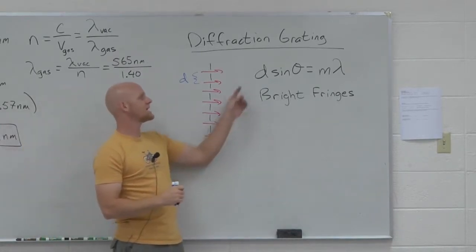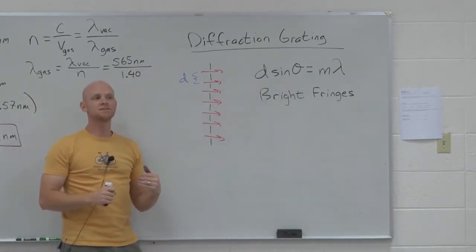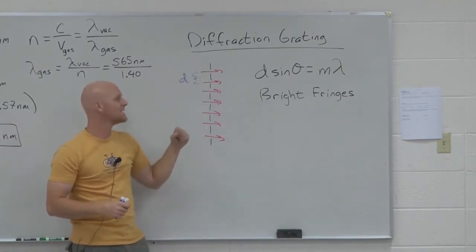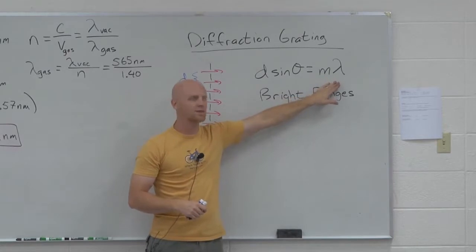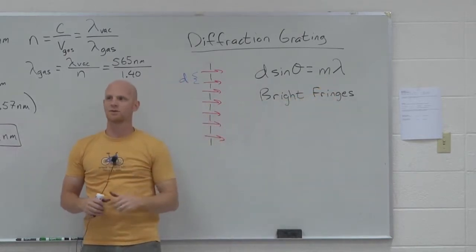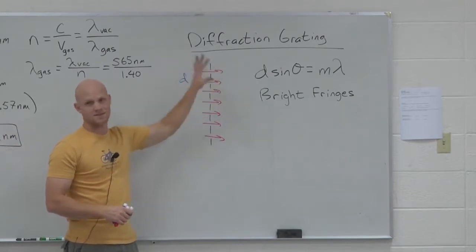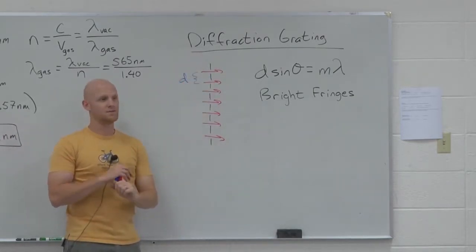But again, d sine theta, the extra distance one ray would travel compared to another if it came out of a different slit, has to be some multiple of wavelengths if we're gonna have constructive interference and get a bright fringe. Everything else calculation wise is exactly the same as the two slit model.